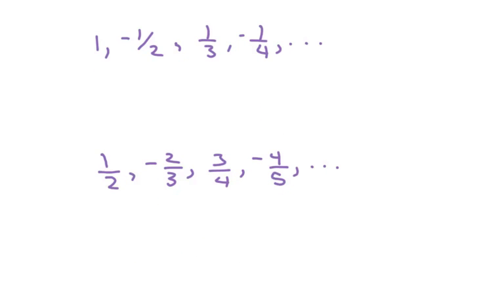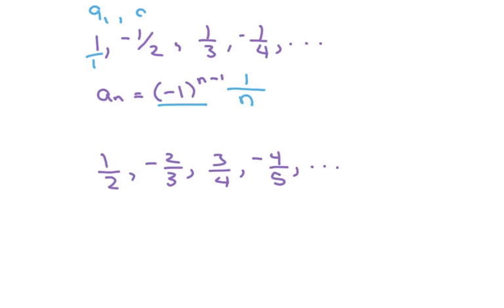Here we have another alternating sequence, so I write the alternating sign. I can write this as 1 over something, with 1 on top. I don't worry about the negatives now because I already handled it with the sign. It's just going to be 1/n. Write it down and make sure your index numbers are matching.